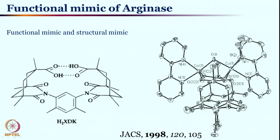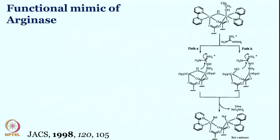More importantly, there is a hydroxo bridge between the two cobalt centers, and two nitrogen-based bipyridine centers are present. This is going to be a functional mimic — manganese is no longer present, and instead of one histidine per metal center there are two pyridines. All these variations are there; this is not perfect, but despite not having the perfect structure, synthetic chemists were able to show that this compound is capable of doing similar reactivity as seen in the L-Arginase case.